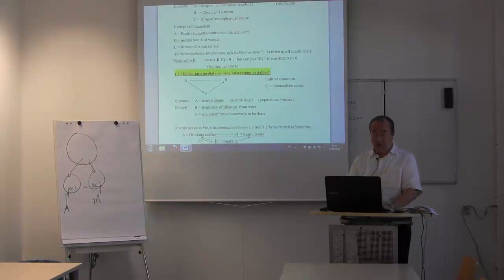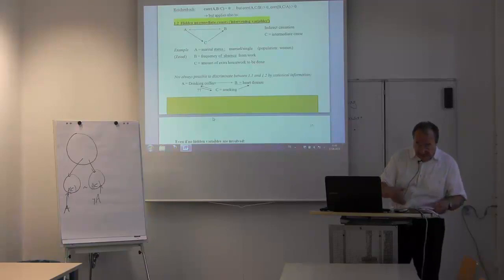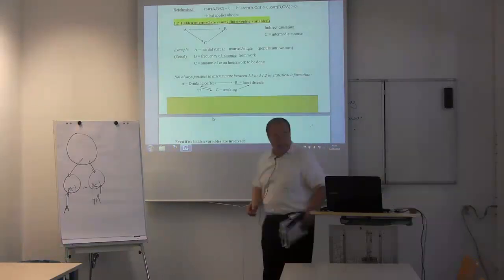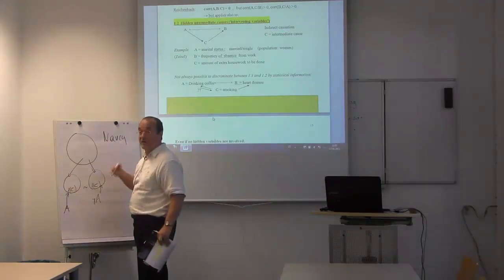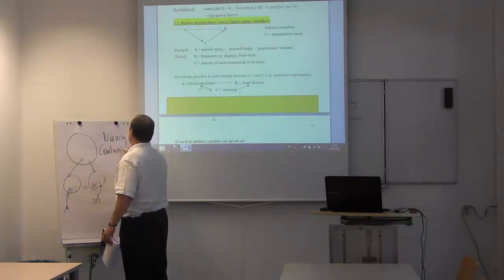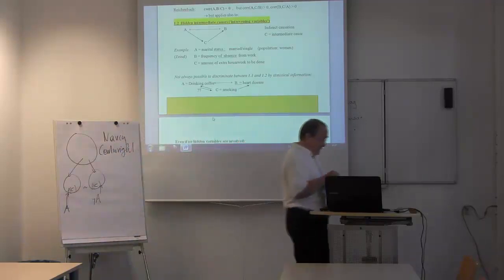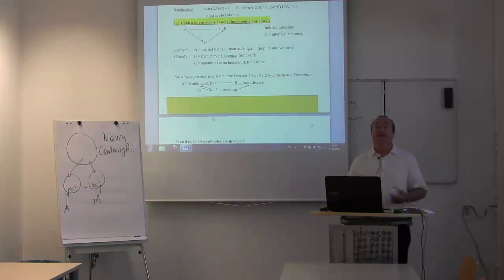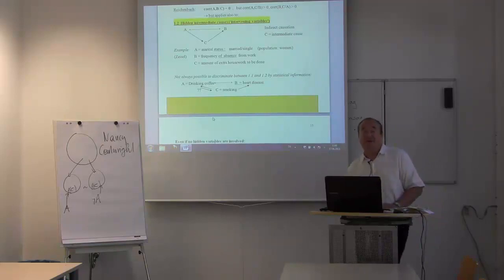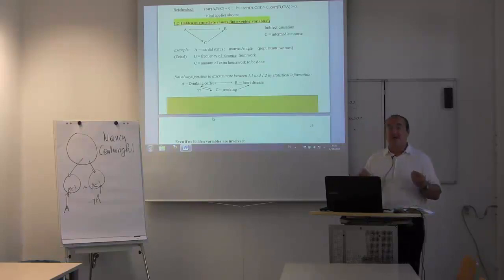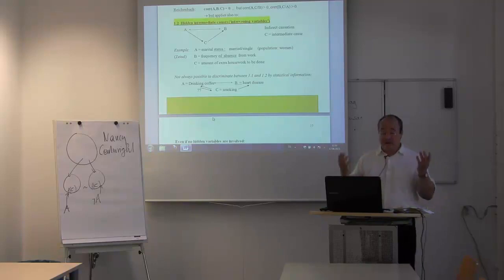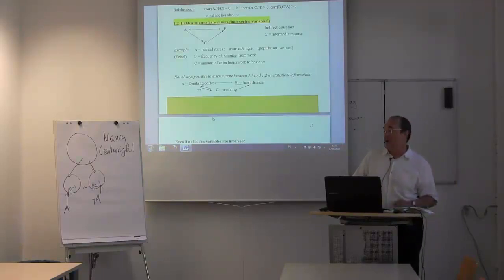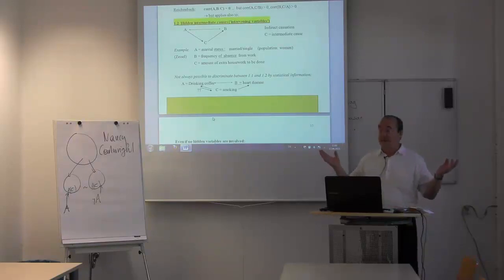Let me go to a final example. There is a nice example of how these criteria work, due to Nancy Cartwright — a philosopher of science who very early dealt with the problem of how you can or cannot infer causality from correlations. She gave the following example: at a university in the USA, a correlation was found between the gender of applicants and the admission rate. At U.S. universities not everyone can study — you have to pass a test with a certain acceptance rate. The frequency of female applicants who were accepted was significantly lower than for male applicants.